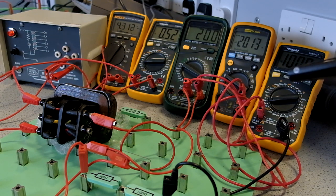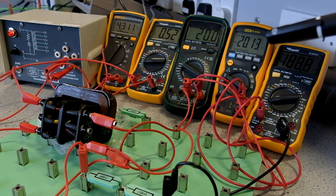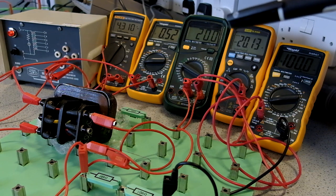We have a current of 100 milliamps, 0.1 amps on the output side. We have 20.1 volts coming out. We have two voltmeters here.